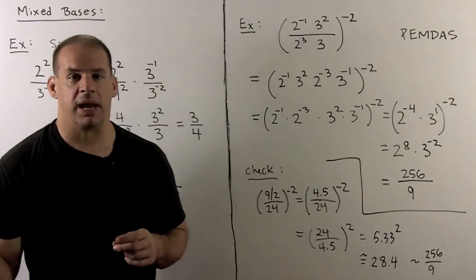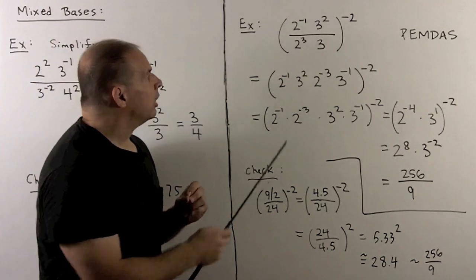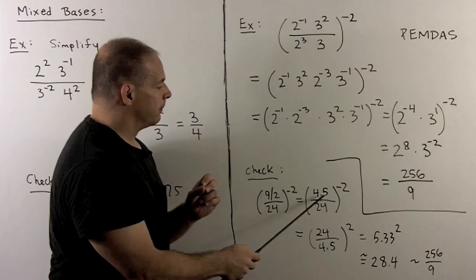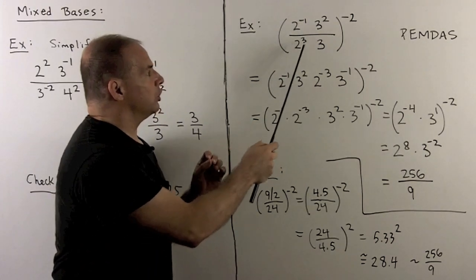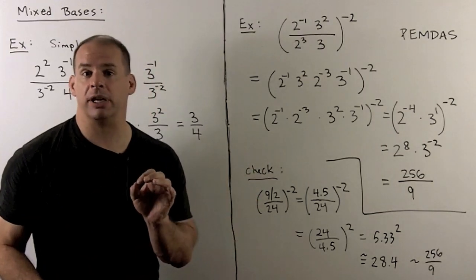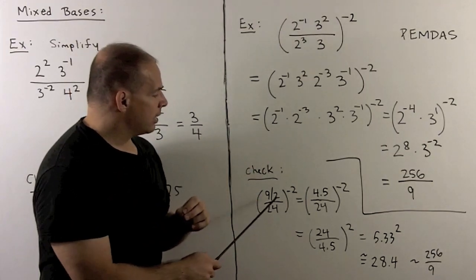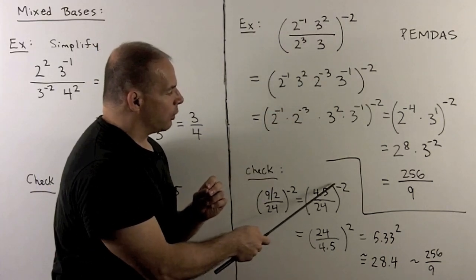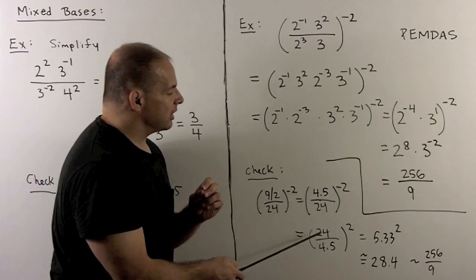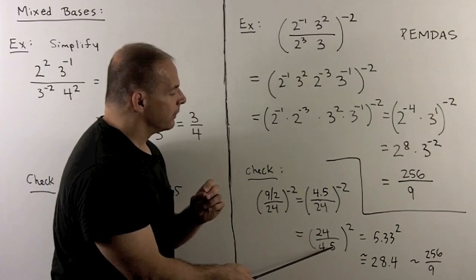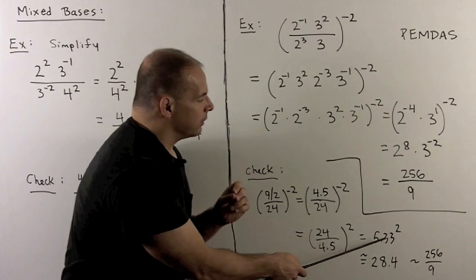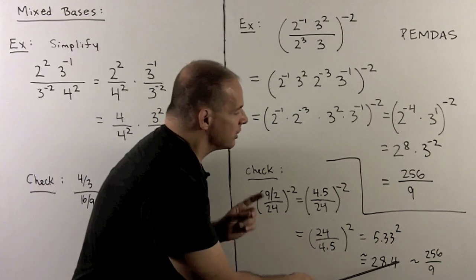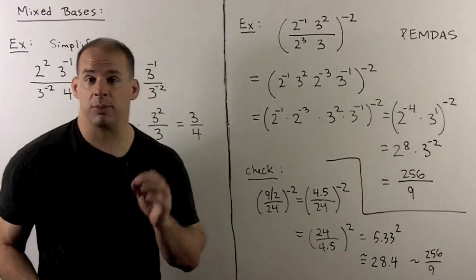To check: three squared is nine, divided by two gives four and a half. In the denominator, two cubed is eight, times three gives twenty-four. We raise four and a half over twenty-four to the minus two power — flipping the fraction gives twenty-four over four and a half, which is about 5.33. Squaring that gives roughly 28.4, which equals 256 over nine. That checks our work.